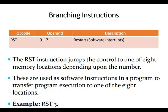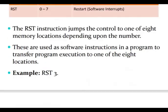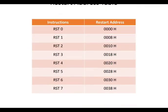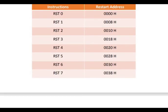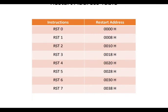Some more branching instructions include RST, with values 0 to 7. These are related to interrupts, which we will discuss in further lectures. RST 0 maps to memory location 0, RST 1 maps to location 8, RST 2 maps to location 10, and so on.